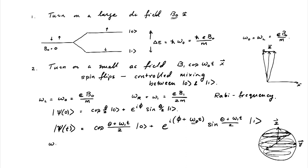Now, if you actually want to create a spin flip, what you would do is choose a pulse. We keep the DC field B0 constantly switched on, and every time we want to perform a gate, we turn on the small AC field. How long should we turn it on? If you want an actual spin flip, we want omega_1 * t to equal pi. So we switch it on for a time delta_t such that omega_1 * delta_t = pi.